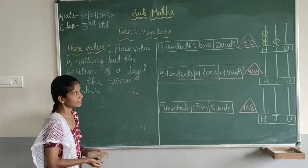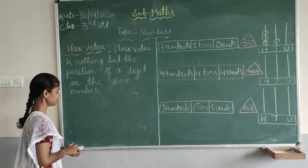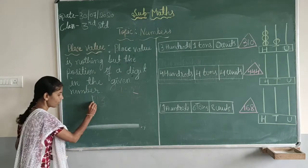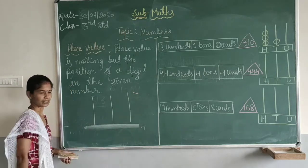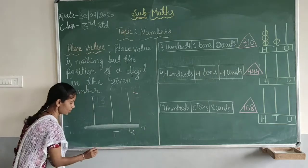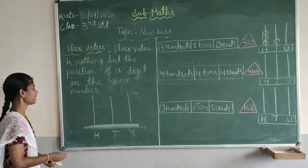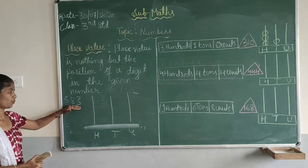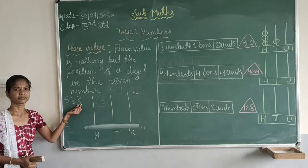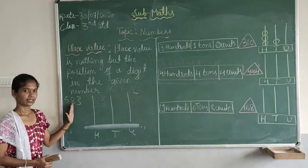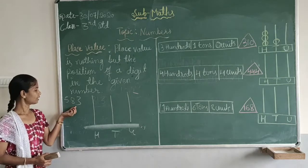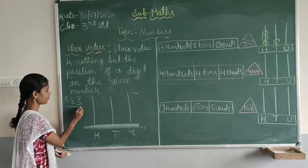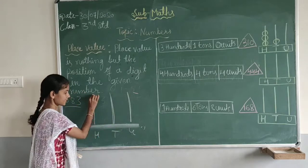According to this, we will now learn the abacus. Take one base with rods. This is the base, and on this base we will take 3 rods: the units rod, the 10's rod, and the 100's rod. If the number is 585, this is a 3-digit number. We will draw beads on these rods.